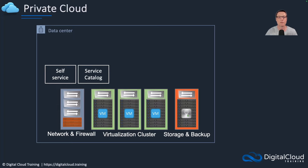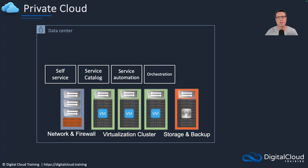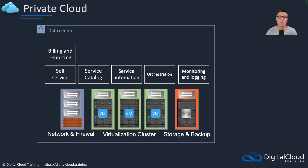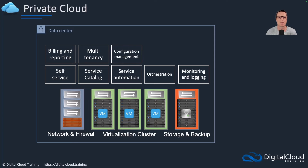On top of that infrastructure, we have to add those capabilities: we need the self-service, we need the service catalog, we need service automation, and we need orchestration so everything is automated in terms of delivery. Monitoring and logging so we know what's going on. Billing and reporting so that we can charge the customers. Multi-tenancy so we can have multiple customers — in a private cloud those might be different business units within your company. And then other things like configuration management, lifecycle management, security, and identity.